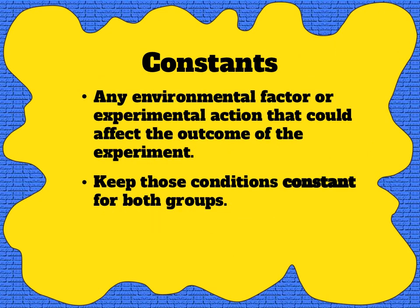In a controlled experiment only one thing should change: the independent variable. This means everything else should stay unchanged or constant. The egg should be the same kind, the same size, treated in the same way, and exposed to the temperature for the same time frame. Keeping these factors constant ensures that we can attribute any changes to the independent variable.